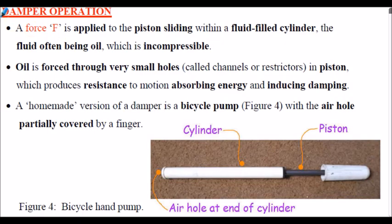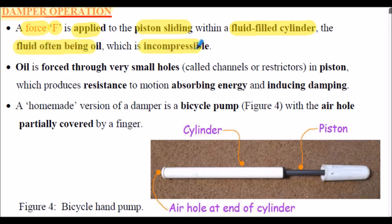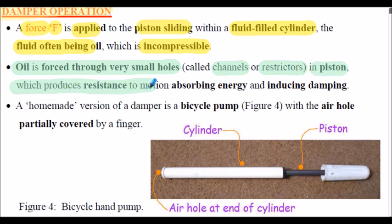Let's consider damper operation. A force F is applied to a piston sliding within a fluid-filled cylinder, where the fluid is often oil, which is incompressible. Oil is forced through very small holes — sometimes called channels or restrictors in the piston — and this produces a resistance to the motion, absorbing energy and so inducing damping.